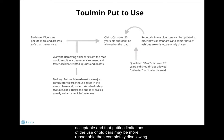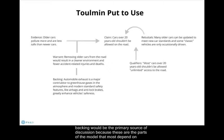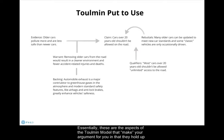Notice especially that if this were an argument being made for an academic essay, the warrant and the backing would be the primary source of discussion, because these are the parts of the model that most depend on factual or hard data — so these would be the places where research information could be used to support this argument. Essentially, these are the aspects of the Tullman model that make your argument for you and hold up your claim and evidence against scrutiny. Without these aspects, you force your audience to connect these dots for you.